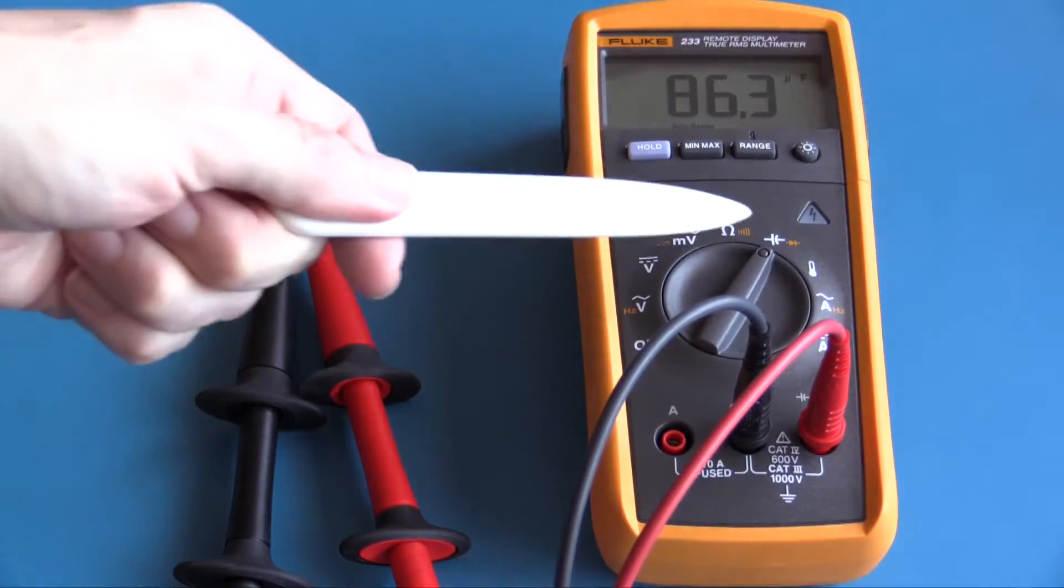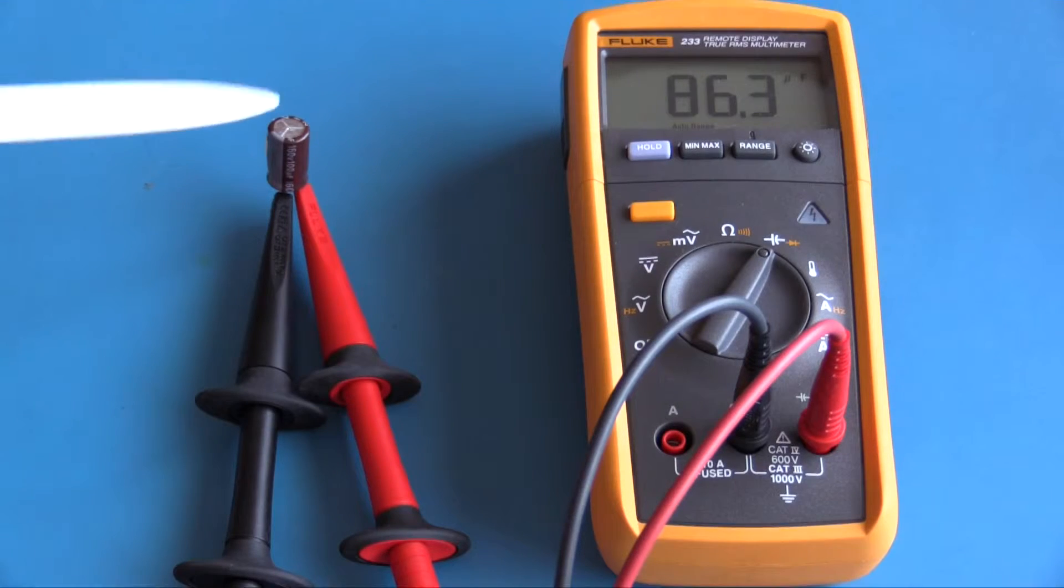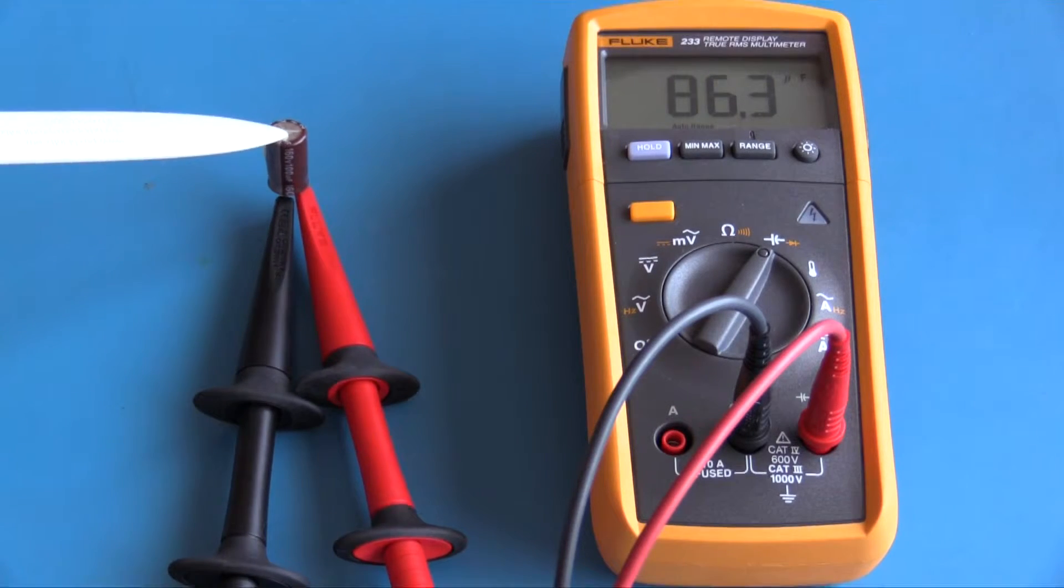I have now selected capacitance. This capacitor is an electrolytic capacitor, 100 microfarad. It's polarized, so the black test lead is on the negative terminal. The Fluke 233 is showing 86.3 microfarad, but probably within specification given the component tolerance.